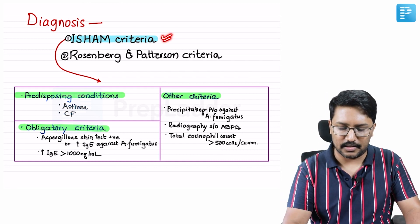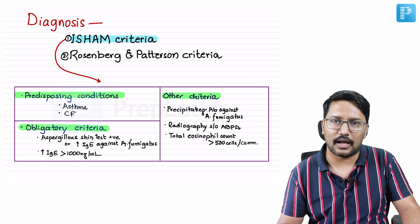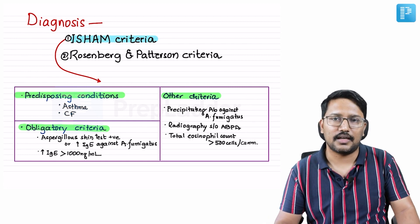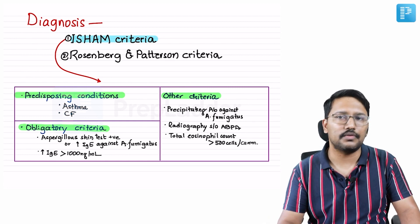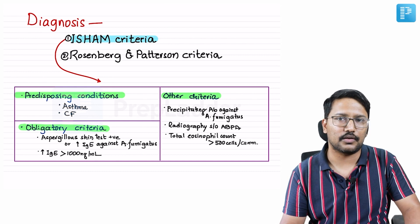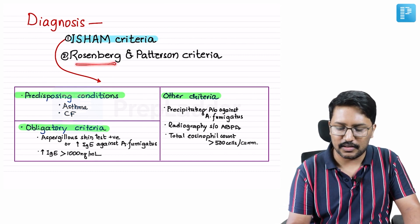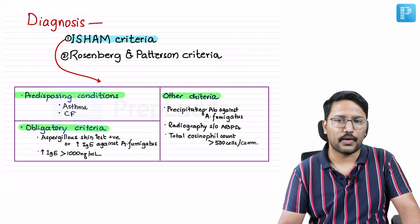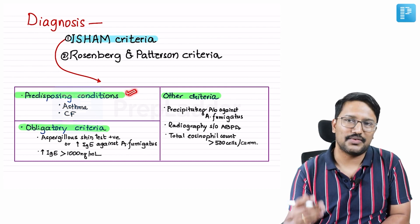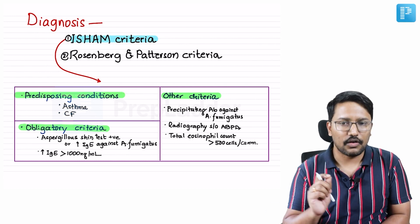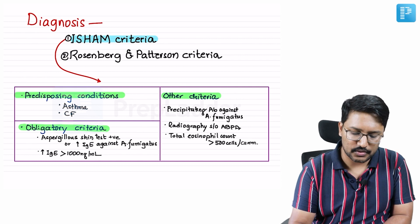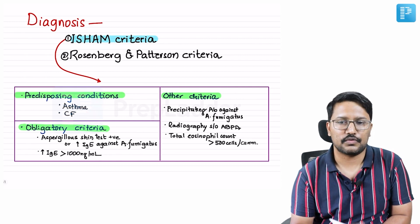We currently follow ISHAM criteria — the International Society for Human and Animal Mycology — which has become the most accepted criteria for diagnosis of ABPA, replacing the older Rosenberg and Patterson criteria. According to ISHAM criteria, the patient should have a predisposing condition, which is mandatory. Without it, you cannot diagnose ABPA. The predisposing conditions are asthma and cystic fibrosis — one of them must be present. Chronic granulomatous disease can also rarely present with ABPA.